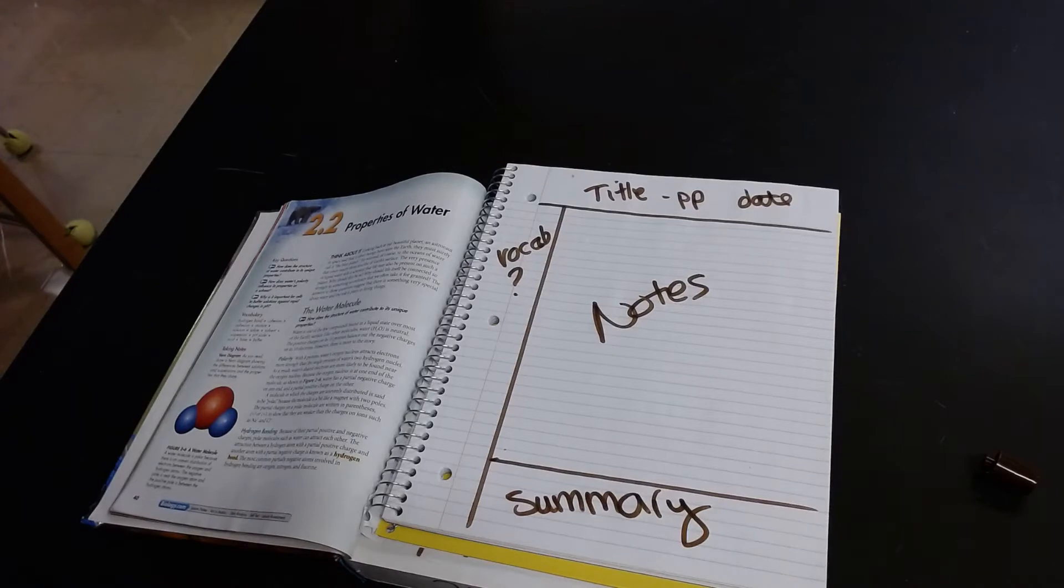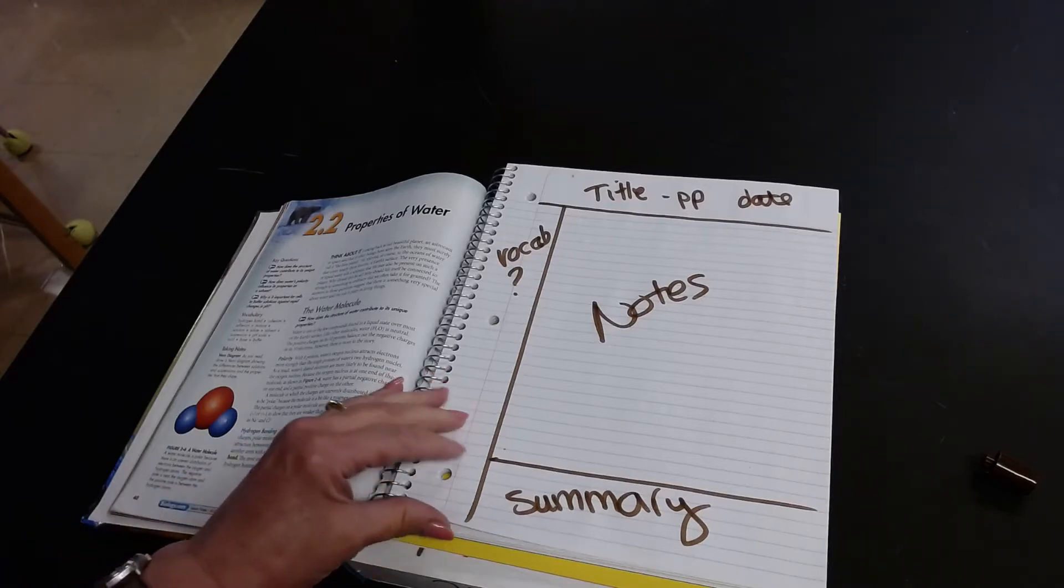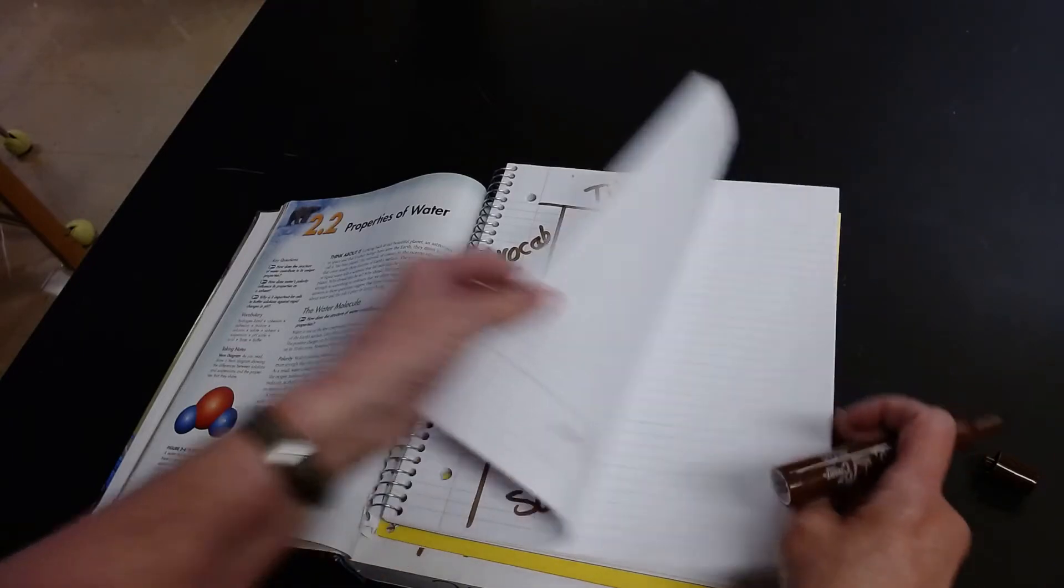And that's how you traditionally set up a Cornell notebook style. You can actually buy Cornell notebook paper which can get somewhat expensive but it's nice if you have it in a notebook already. You don't have to draw your format. I will tell you that I have a number of students who use this method and when they've gone to college they found this to be very helpful for them.